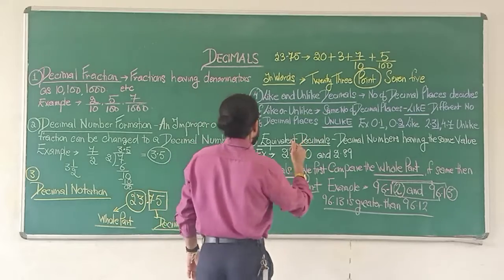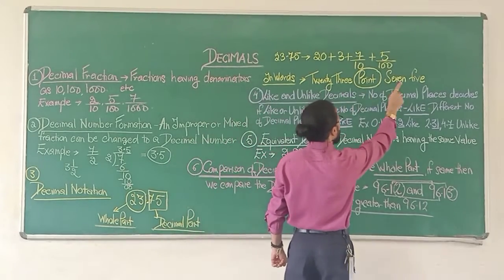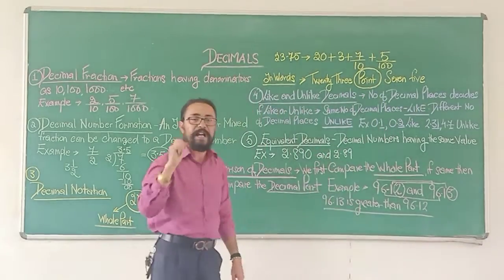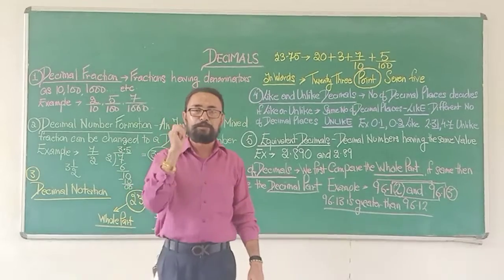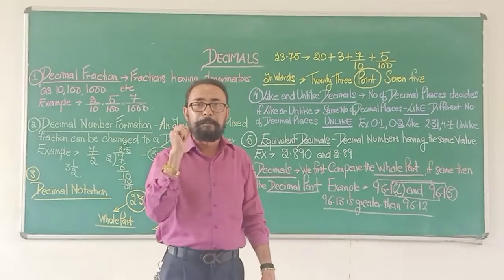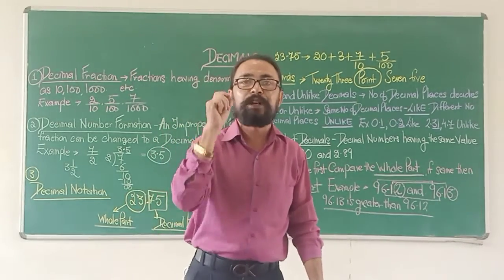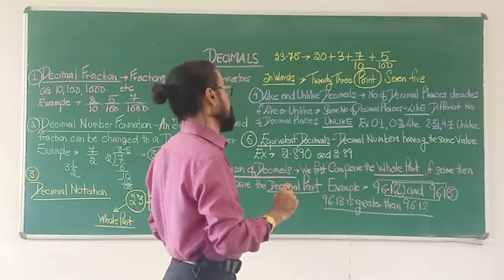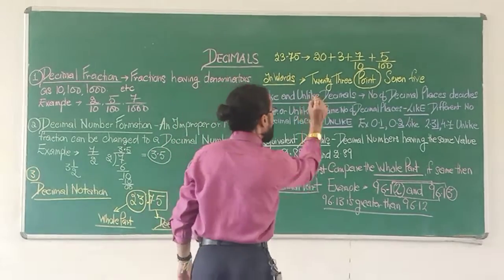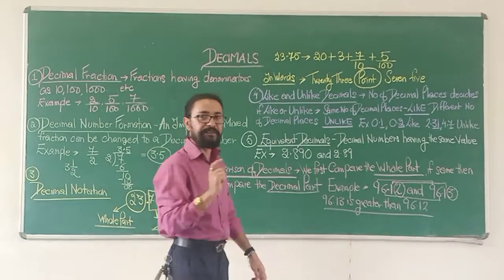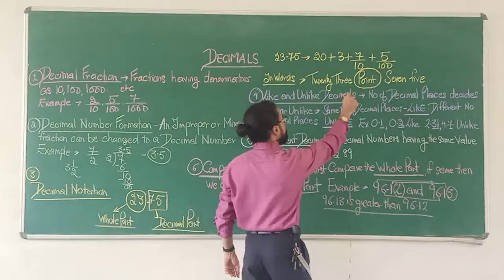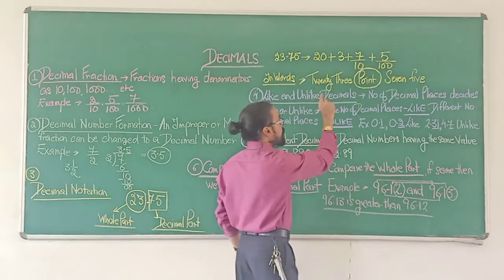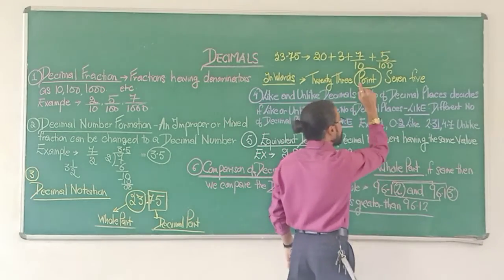How do I write decimals in words? For 23.75, when writing in number names or in words, you have to write P-O-I-N-T. You can't write a symbol and say 'point' — you must write the word 'point.' So it is 'twenty-three point seven five.'